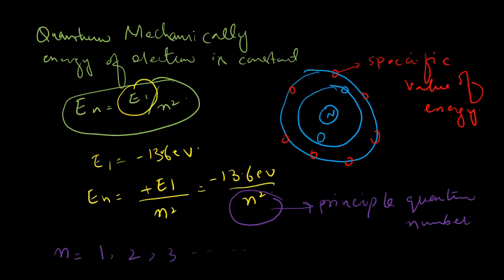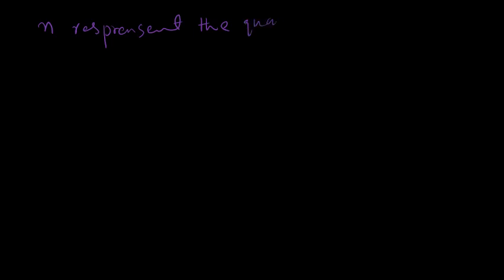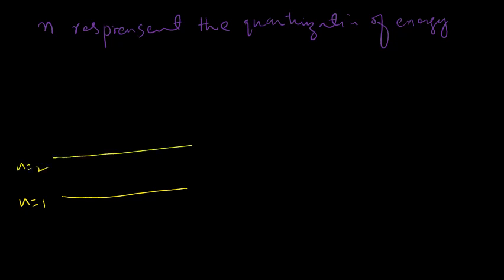The principal quantum number n can have values n = 1, 2, 3, and so on. We have already discussed in the Bohr model that these are quantized orbits. Now let us consider how this principal quantum number explains the quantization of energy. The quantization of energy means that energy takes only specific values, and there are different shells — for example, n = 1, n = 2, n = 3 — corresponding to different Bohr radii.